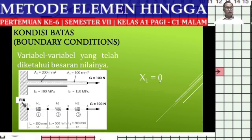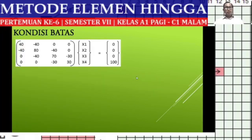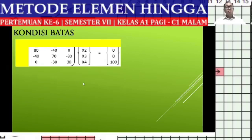That value is already known. Furthermore, at nodal 4 there is an external force of 100 N, which also counts as part of the boundary conditions. Since all numbers multiplied by X = 0 equal 0, we can eliminate the first row and first column.